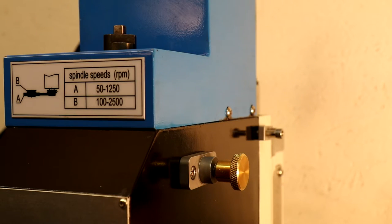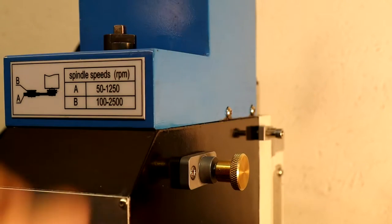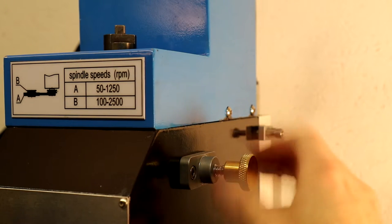This approach, with the spindle lock, works well with the TORMACH TTS quick-change system. Once the tool is installed and the drawbar is tightened, simply loosen the bolt and a spring pulls the bolt out of the detent.